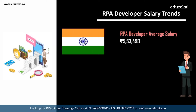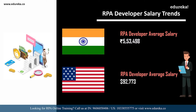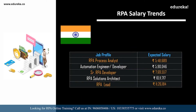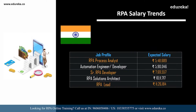According to Indeed.com, on average an RPA developer can expect a salary of 5,53,000 in India and 92,000 dollars in the USA. Looking at other related roles in India: an RPA process analyst can expect around 5,48,000 per annum, an automation engineer or developer around 5,90,000, a senior RPA developer around 7,69,000, an RPA solutions architect around 10,11,000, and an RPA lead around 11,26,000 per annum.